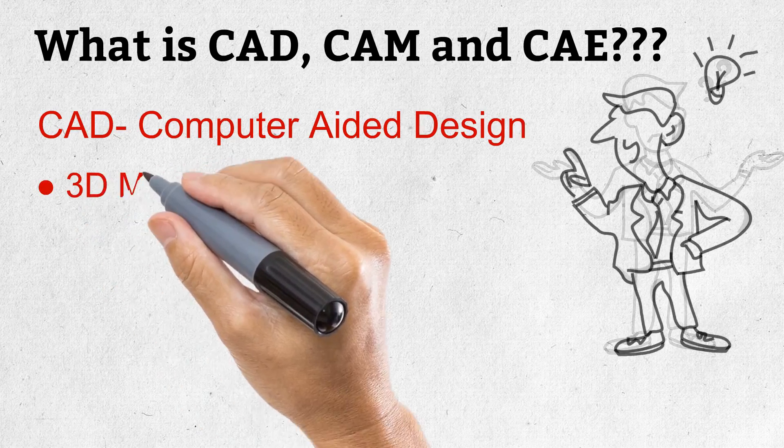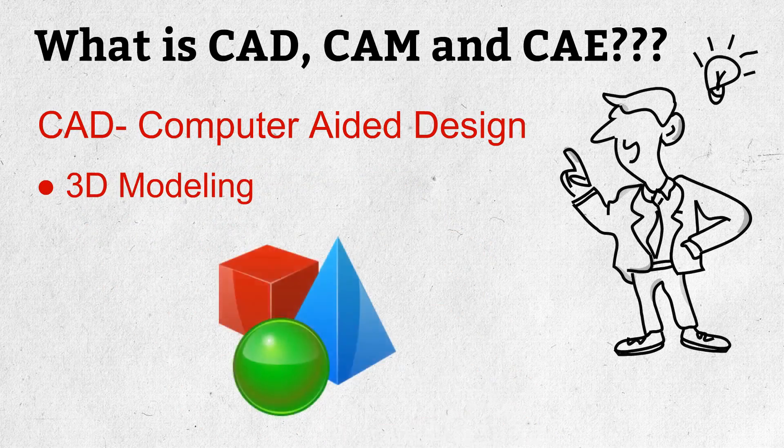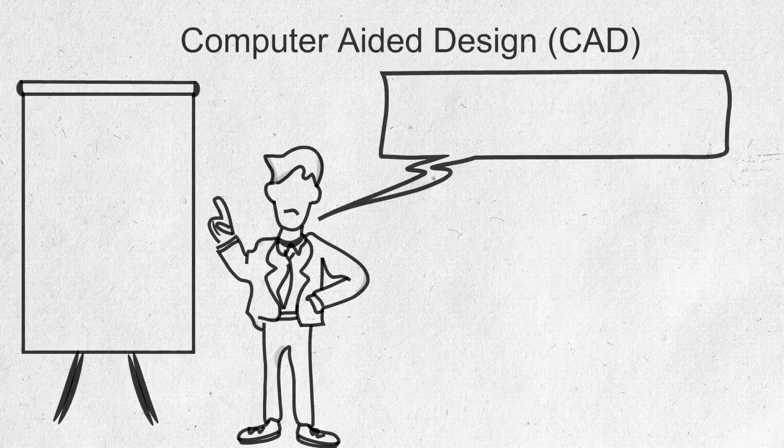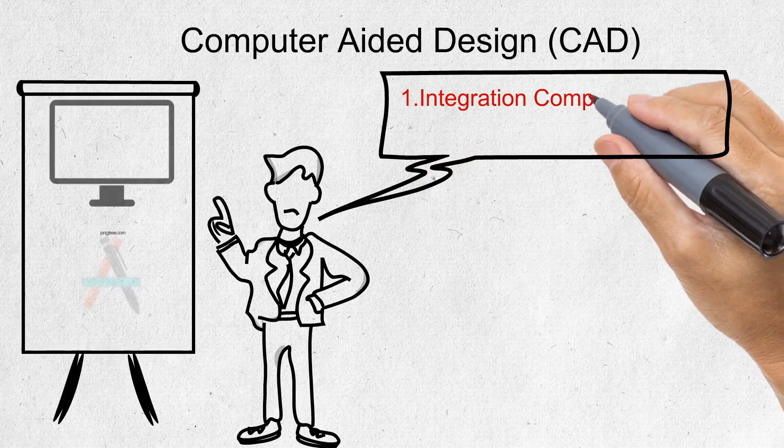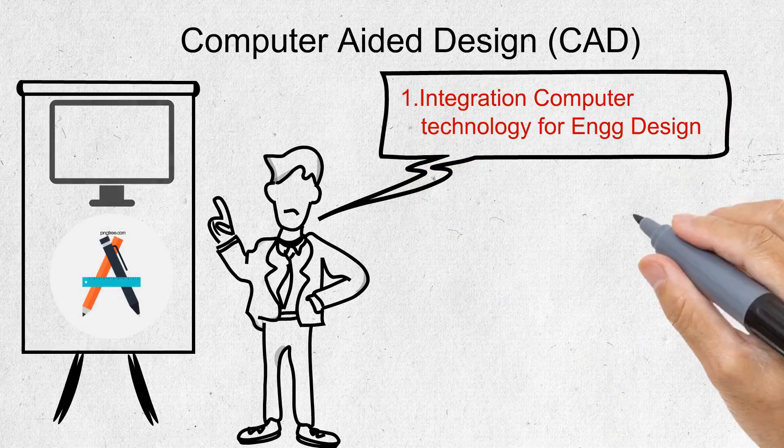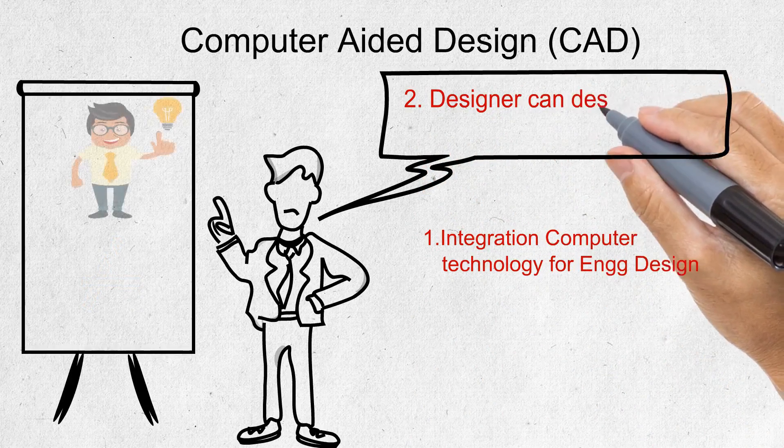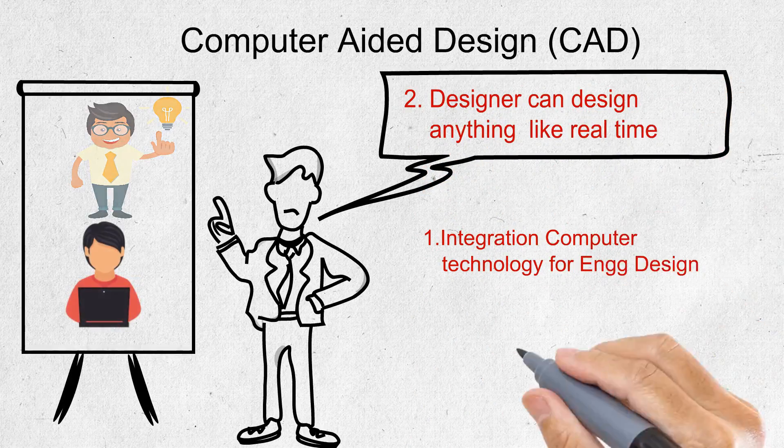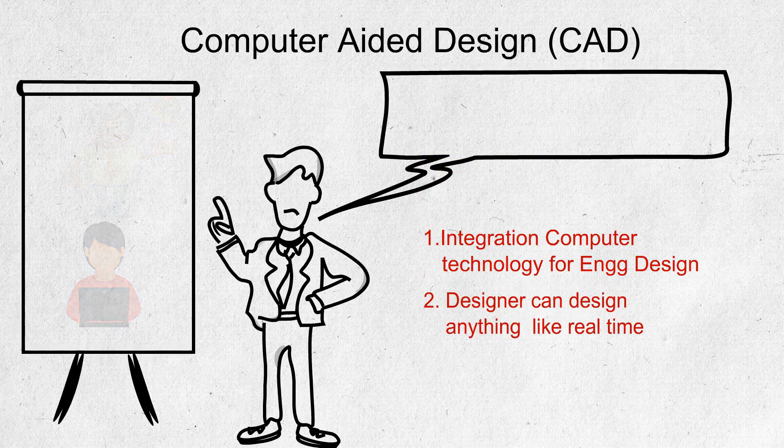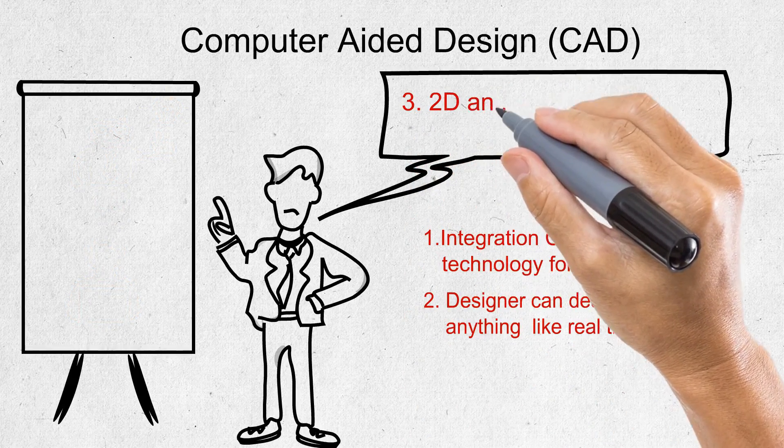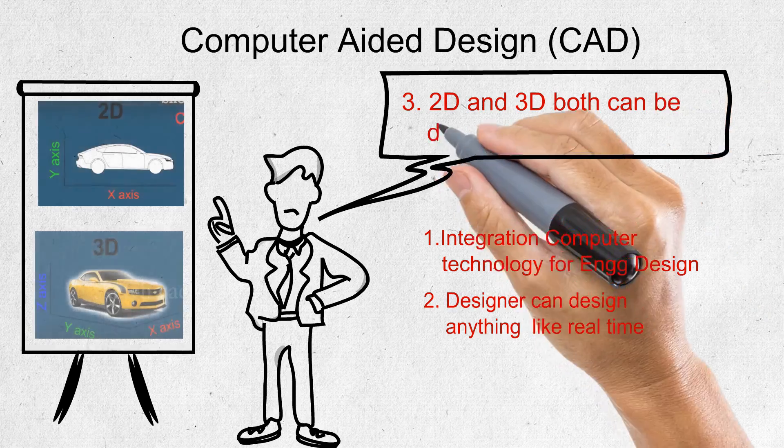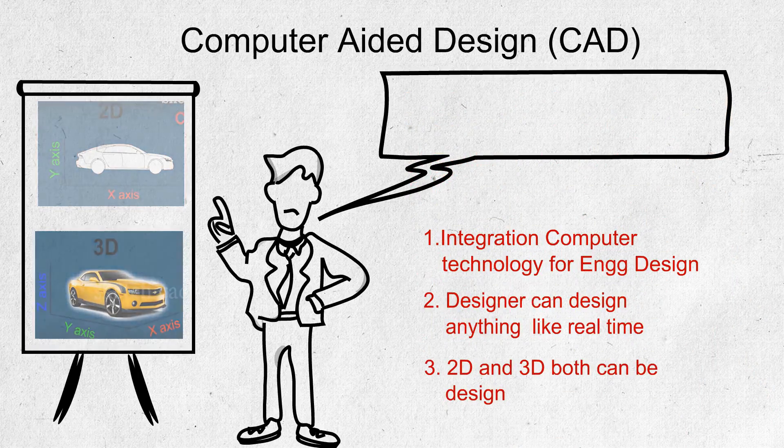It deals with 3D modeling. CAD design integrates computer technology and engineering design, allowing you to design anything in real-time with accuracy. In CAD software, both 2D and 3D dimensions can be designed.